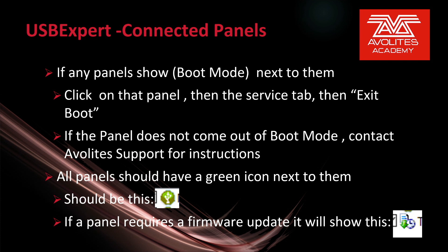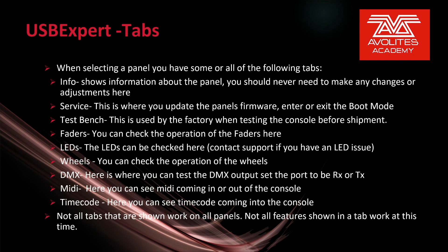All panels should have a green icon next to them — a little green dot with a USB symbol. If the panel requires a firmware update, it will show a piece of paper with a down arrow and a clock. When selecting a panel, you have some or all of the following tabs: Info shows information about the panel — you should never need to make any changes here. Services is where you update the panel's firmware and enter or exit boot mode. Test Bench is used by the factory when testing the console before shipment. Faders: you can check the operation of your faders here. LEDs: the LEDs can be checked here — contact support if you have an LED issue. Wheels: you can check the operation of the wheels. DMX: here you can test the DMX output and set the port to be either RX or TX. MIDI: here you can see MIDI coming in or out of the console. Timecode: here you can see timecode coming into the console. Please note: not all tabs shown work on all panels and not all features shown in a tab work at this time.